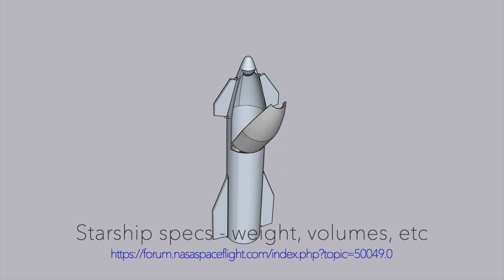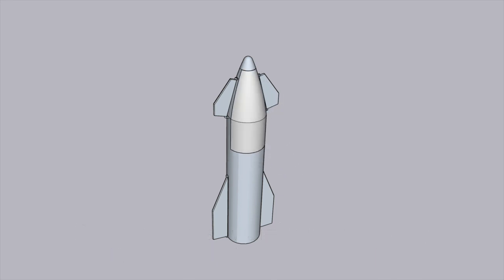Here, you see the simplest version of Starship, the CHOMPER model, which can both deploy large payloads into zero-gravity environments, and in the absence of a payload, it can serve as a refuelling tanker to the main version of Starship.